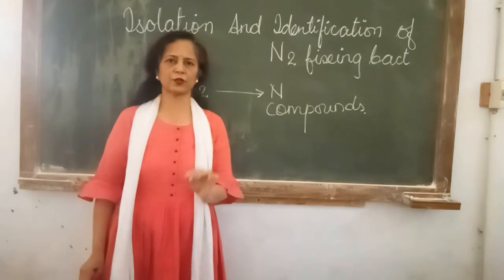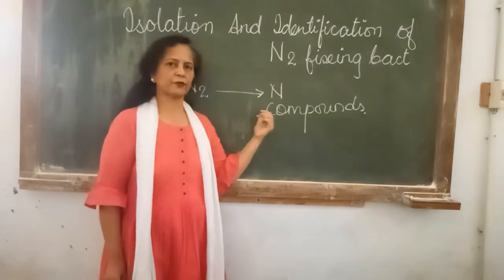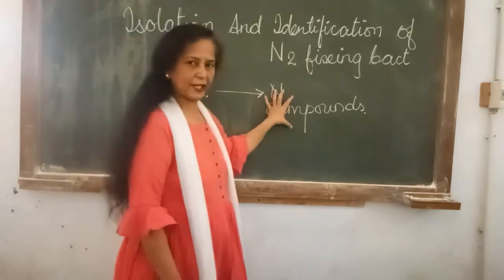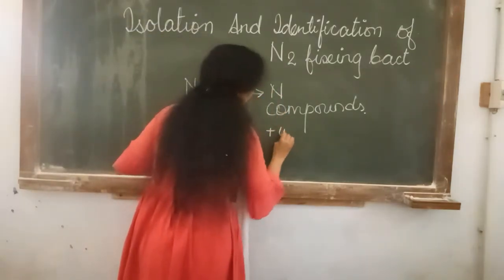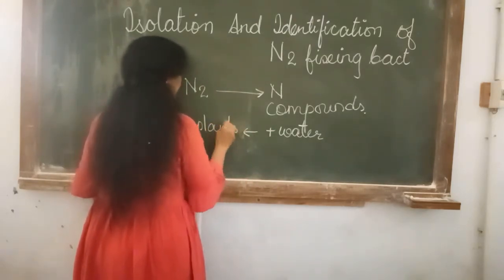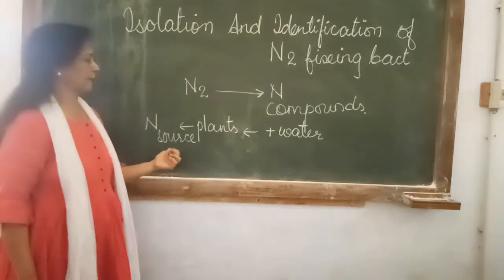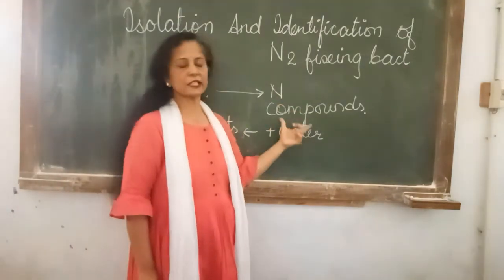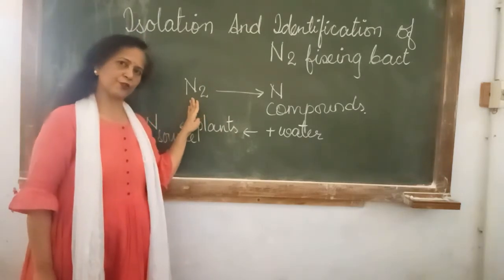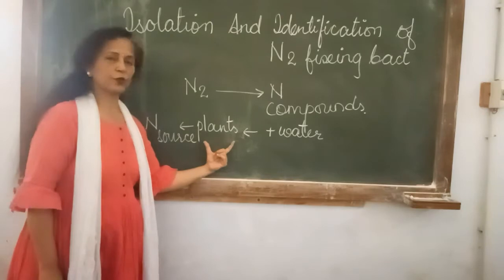This nitrogenase enzyme is extremely sensitive to the amount of oxygen, so most of the time these bacteria have a specific mechanism by which they can save the enzyme from damages caused by oxygen. The nitrogen is fixed in the form of nitrogenous compounds, and these nitrogenous compounds are nicely dissolved inside water. This water can then be taken up by the plants, and thereby the plants will get the nitrogen source.